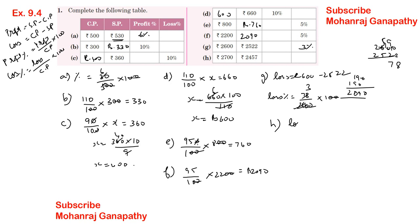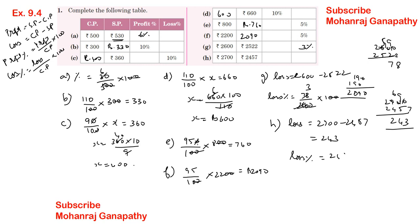For part (h), loss equals 2700 minus 2457, which is 243. Loss percentage equals 243 divided by 2700 into 100, which gives 9%. Therefore loss percentage is 9%.